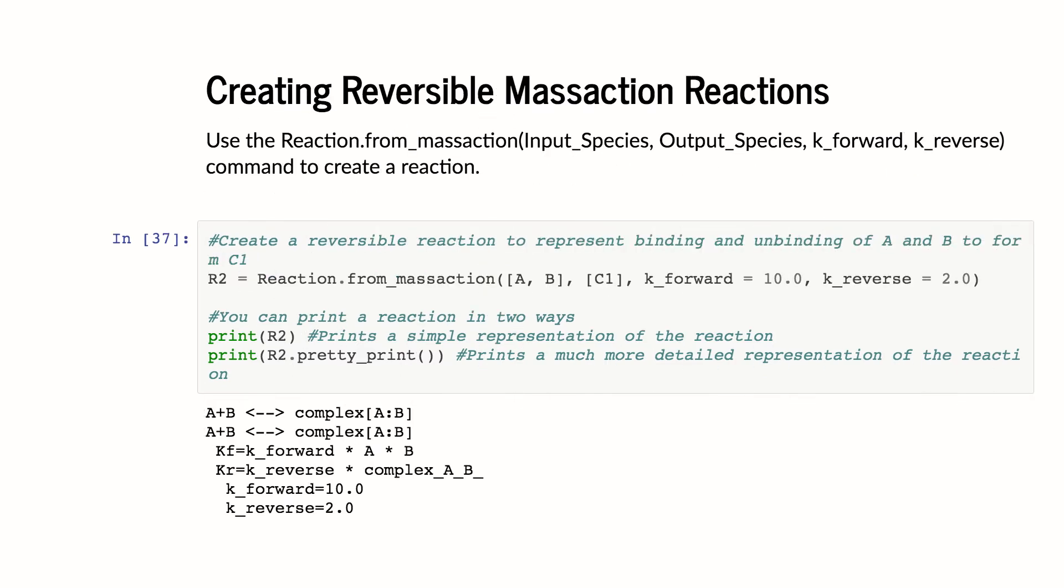If I want to make my mass action reactions reversible, it's very easy. I make R2 is still reaction dot from mass action. But here I add in one more keyword, K reverse. And so now I'm going to make two reactions, A and B go to C1.